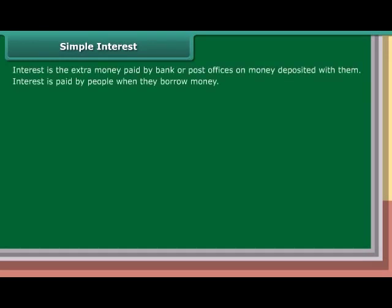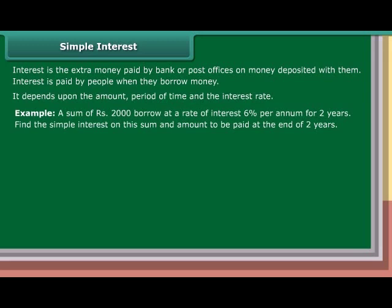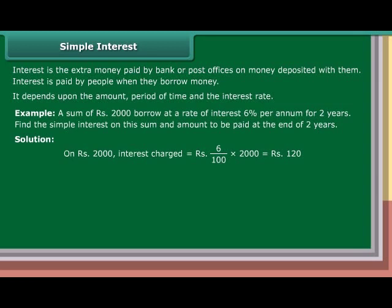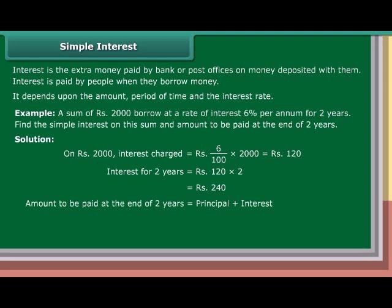Simple Interest: Interest is the extra money paid by banks or post offices on money deposited with them. Interest is also paid by people when they borrow money. It depends upon the amount, period of time, and the interest rate. Example: A sum of Rs. 2,000 is borrowed at a rate of 6% per annum for 2 years. Interest for 1 year equals 6 upon 100 into Rs. 2,000, equals Rs. 120. Interest for 2 years equals Rs. 120 into 2, equals Rs. 240. Amount to be paid at the end of 2 years equals principal plus interest, which equals Rs. 2,000 plus Rs. 240, equals Rs. 2,240.